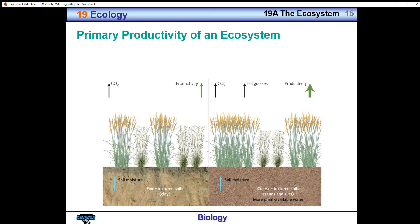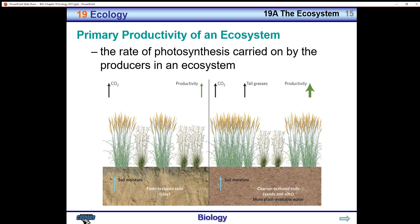When we look at the ecosystem, one thing we're concerned about is how productive the plants are at providing nutrients. The rate of photosynthesis carried on by the producers in an ecosystem can be evaluated, and it is often affected by soil moisture — soil that retains moisture is able to support more plants than soil that is dry much of the time.